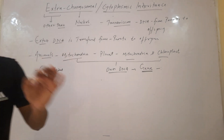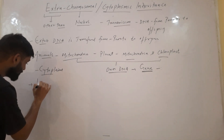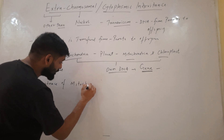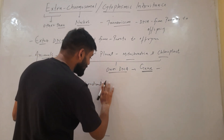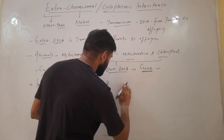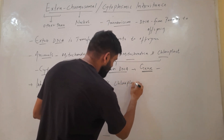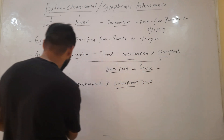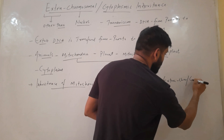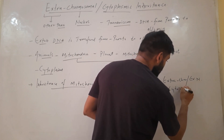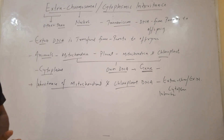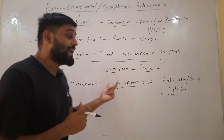So you can say that the inheritance of mitochondria and chloroplasts — whose DNA is present inside these organelles — is called extra chromosomal, extra nuclear, and cytoplasmic inheritance. So what is extra chromosomal or extra nuclear inheritance? It is the inheritance of mitochondrial and chloroplast DNA.